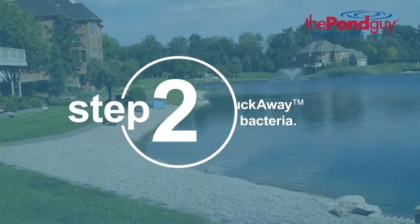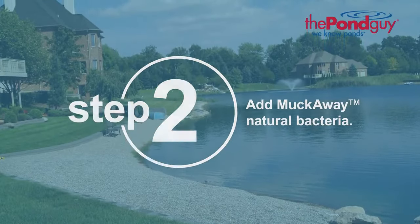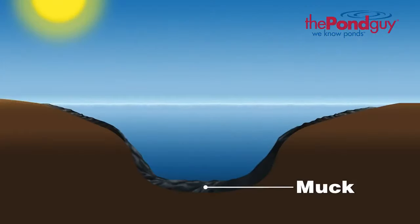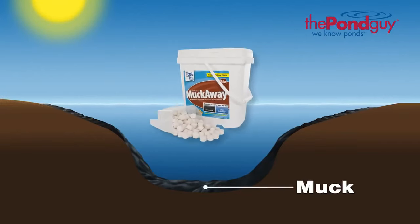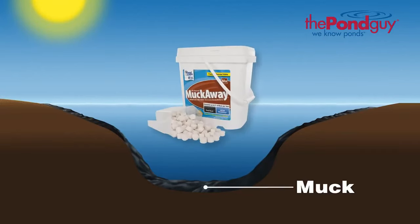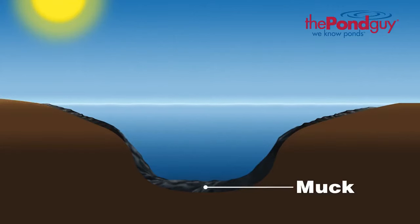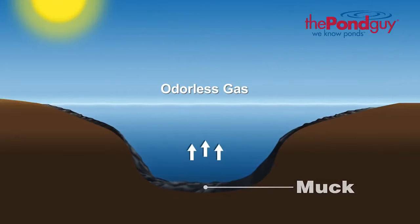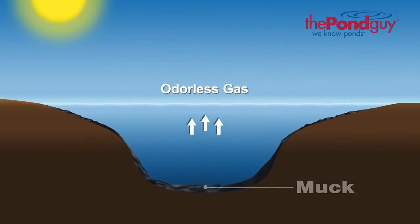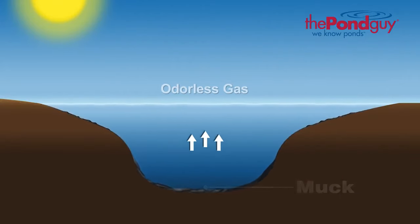Step two: add Muckaway natural bacteria. Now that we have a few ways to reduce debris from getting into the pond, the next step is to introduce beneficial aerobic bacteria like Muckaway to further reduce the muck already in the pond. Muckaway contains sinking pellets that work to digest and transform muck into an odorless gas that escapes unnoticed out of the water column.